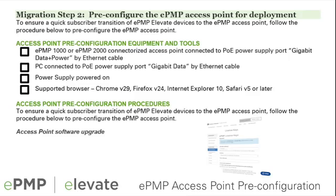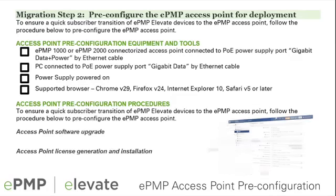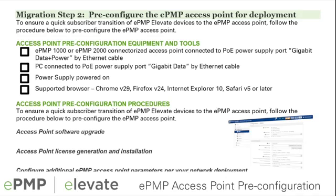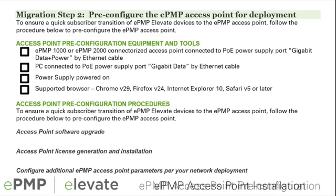Step two includes pre-configuration of the access point prior to deployment, including software upgrade, access point license generation and installation, and configuration of any additional parameters inherent to the original network.